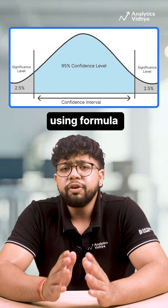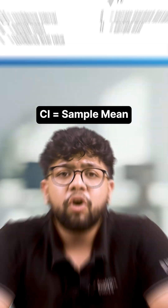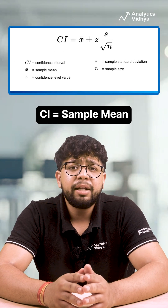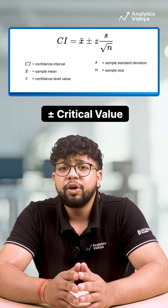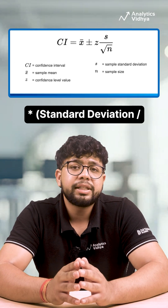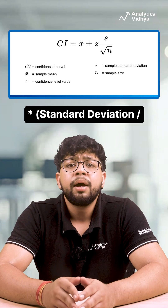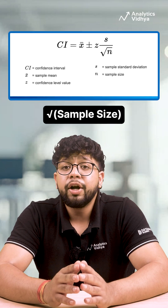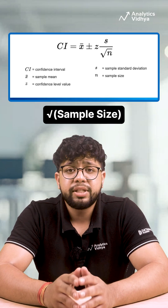Using the formula: confidence interval equals the sample mean plus or minus the critical value multiplied by standard deviation divided by the square root of the sample size.